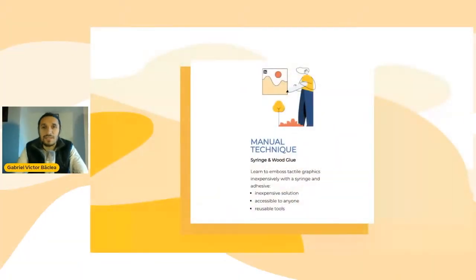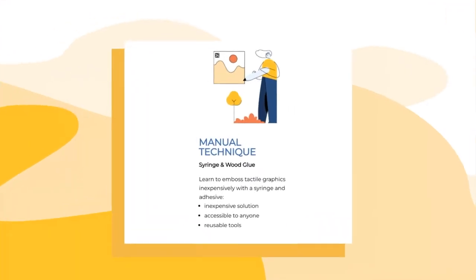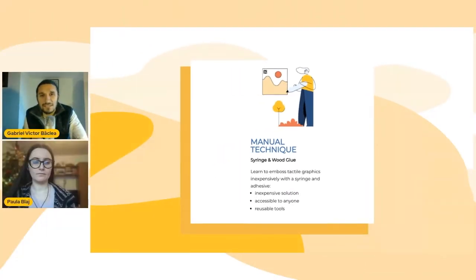Now, here comes the question: why are we doing this webinar? First, we noticed that there is a need for spatial information. Children need to know what the objects around them look like and understand abstract concepts. Then we came across a stronger barrier to meeting this need: the high costs. Tactile teaching materials are very expensive. Therefore, one of the solutions we have identified is manual embossing through wood glue and organic materials. Hence, the purpose of our meeting today is to share with you the manual embossing methods and techniques that we have been using for over 10 years in order to succeed in creating easier and cheaper educational materials for children in need.